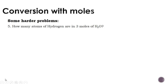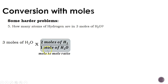Now we're going to talk about some harder problems. Question 5 says: how many atoms of hydrogen are in 3 moles of H₂O? The problem gives us 3 moles of H₂O and we want to get to atoms of just hydrogen. There's a mole-to-mole ratio: in this compound, for every 1 mole of H₂O there are 2 moles of hydrogen — the 2 comes from the subscript. When we apply that, moles of H₂O cancel and our answer is now in moles of hydrogen.